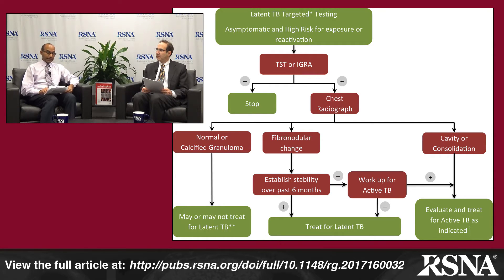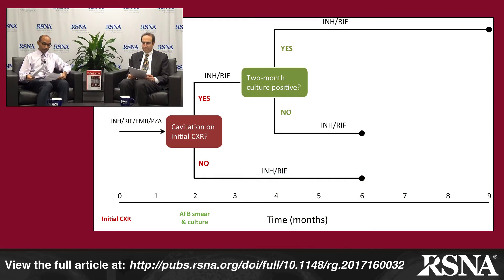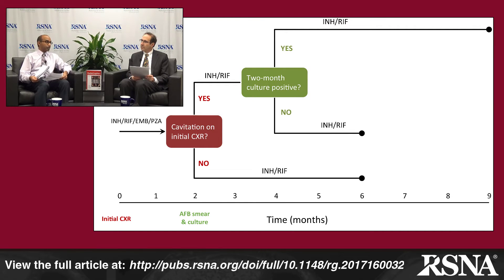An important point: if there is a cavity on the initial chest x-ray, that changes management in terms of how many months of active TB treatment the patient receives. As shown in figure 23, if cavitation is present on chest x-ray and the culture at two months after the initial four-drug treatment is positive, those patients get a total of nine months of treatment. But if the initial chest x-ray had no cavitation — consolidation is okay, but specifically no cavitation — or the two-month culture is negative, those patients only get a total of six months of therapy.